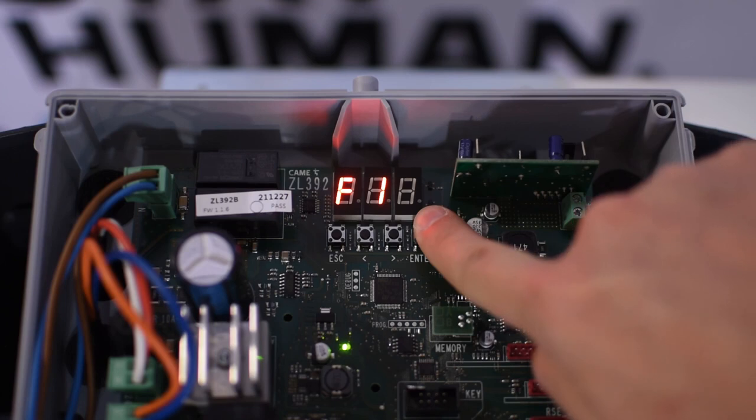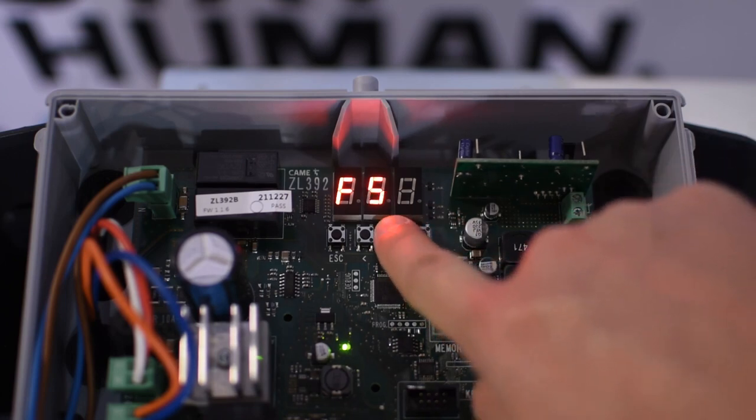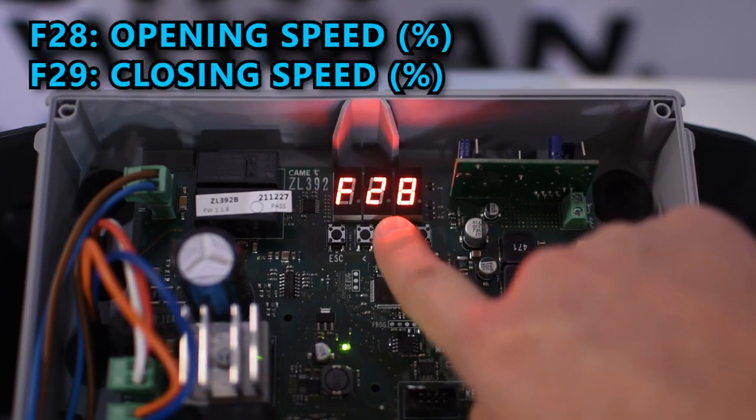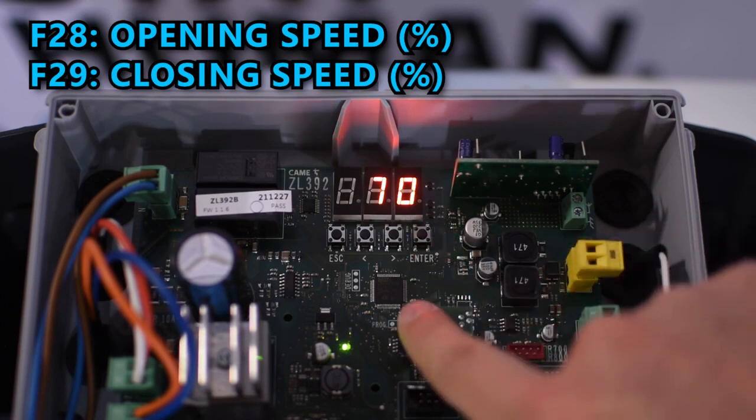One function you might want to change is the speed of movement that you can edit in F28 for opening and F29 for closing speed.